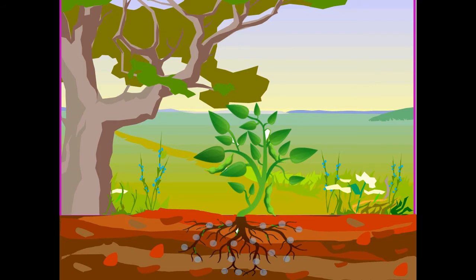As we all know, there is 78% of nitrogen present in atmosphere. But plants cannot use it directly as they can use carbon dioxide.